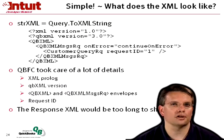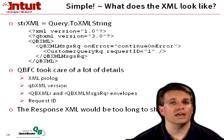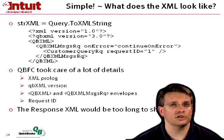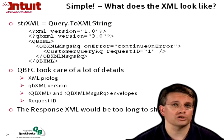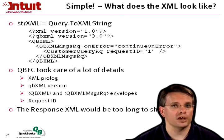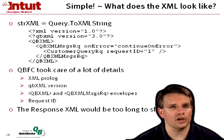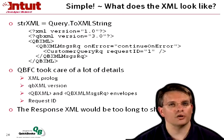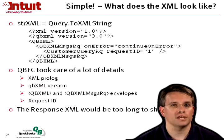QBFC created the XML prolog for me, XMLVersion equals 1.0. It specified what QBXML version I wanted to speak with QuickBooks — in this case, version equals 3.0. Then I get the QBXML and QBXMLMessagesRequest envelopes. And you can kind of see here why there were all those levels that we had to walk down within QBFC.